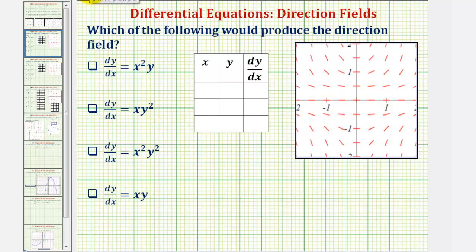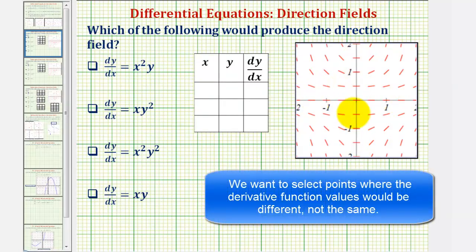Before we do this, notice how all along the x-axis when y is zero, as well as all along the y-axis when x is zero, for all these derivative functions, these products would be zero — and notice how the slopes of all segments along the x-axis and y-axis are zero. So we don't want to pick points on the x-axis or y-axis. Also notice that at the point (1,1), all derivative function values would be one, so we won't use that point either.